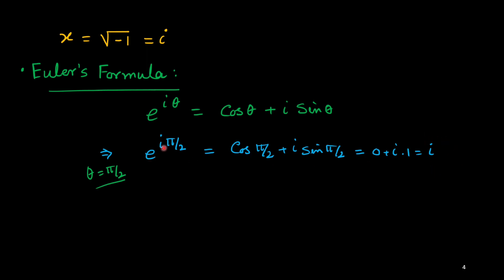So x to the power x means i to the power i. This i we can replace by e to the power i pi by 2, and to the power i here.